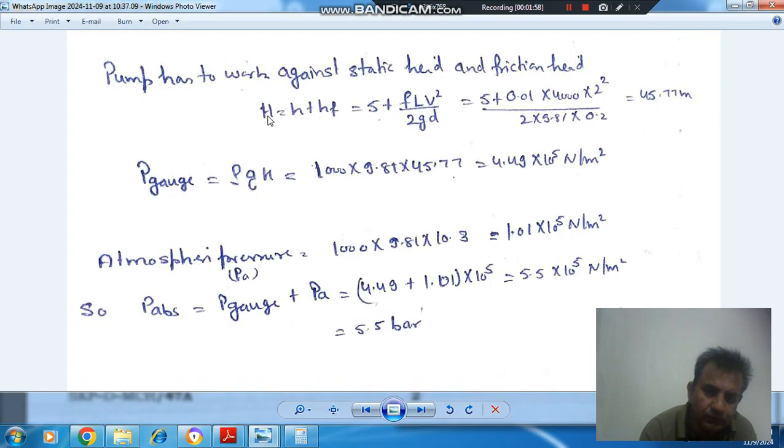So using this we get the total head that pump has to work against is 45.7 meters. So the gauge pressure will be ρGH. So ρ is 1000, G is 9.81, H is 45.77.